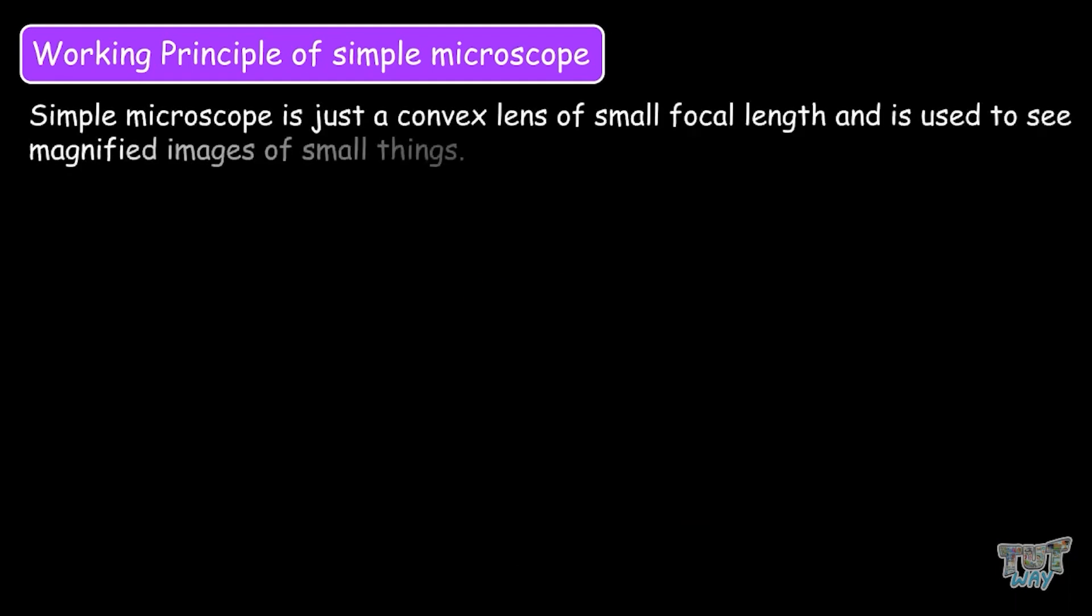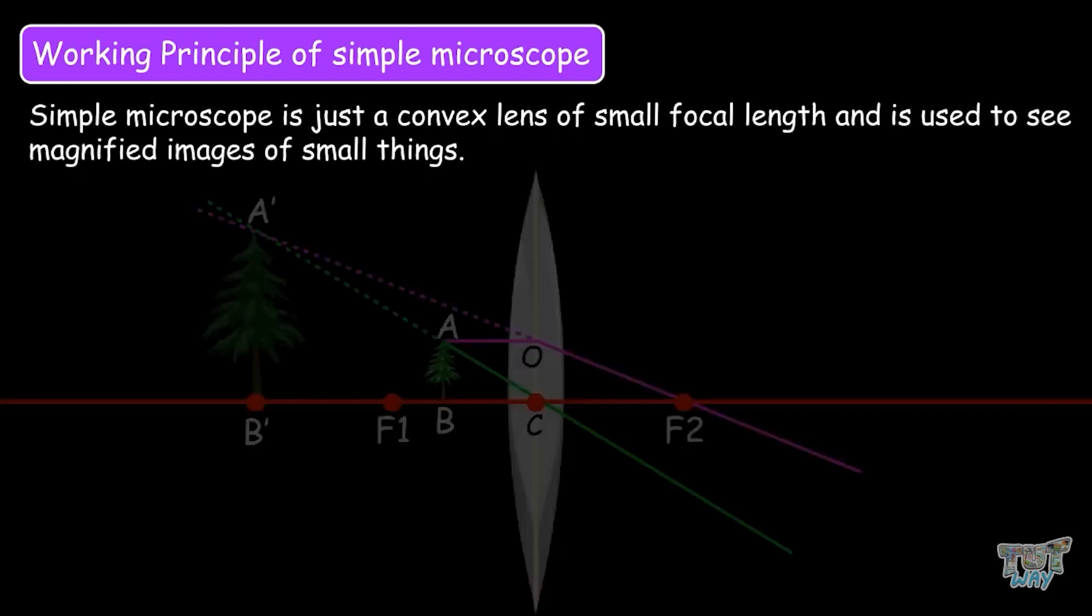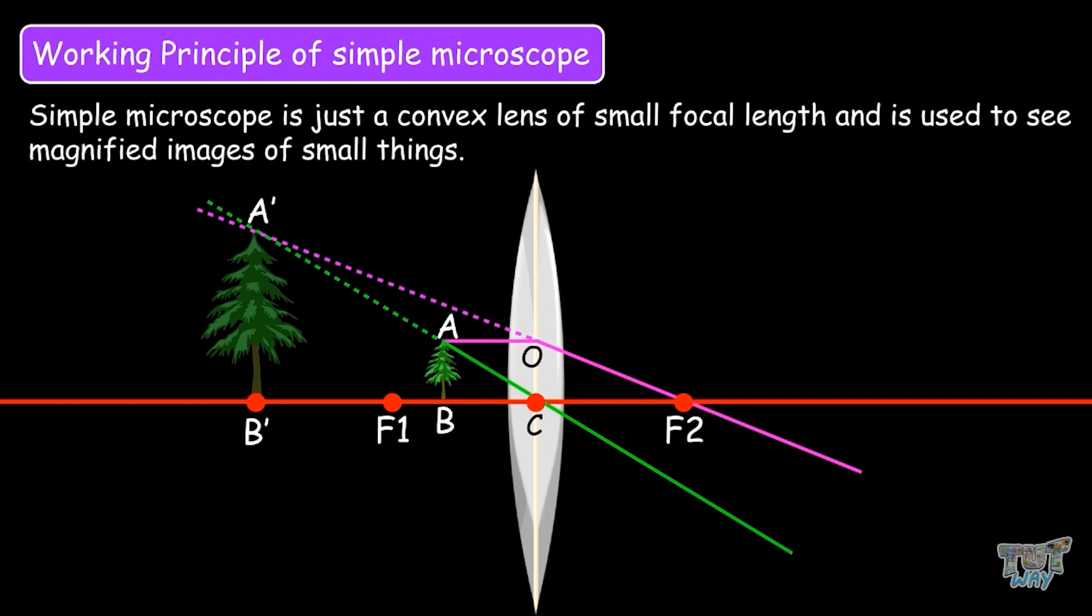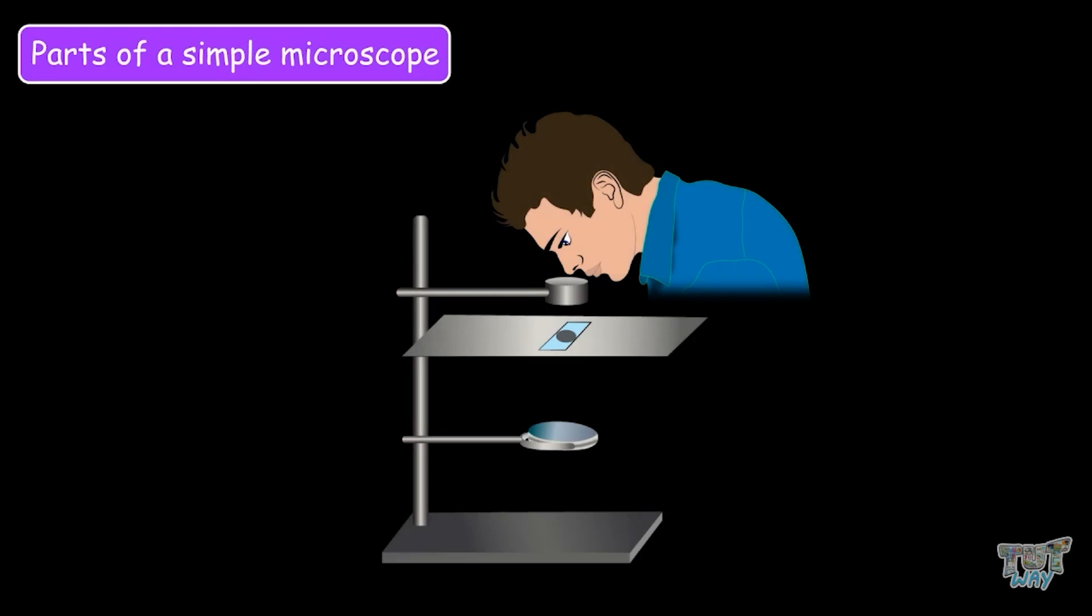Now let's learn the working principle of the simple microscope. A simple microscope is just a convex lens of small focal length and it is used to see magnified images of small things. When an object is placed within the focus of the convex lens, a virtual, erect, and magnified image of the object is formed which is viewed from the other side of the lens. Now let's learn the parts of this microscope.